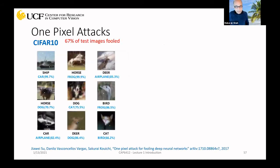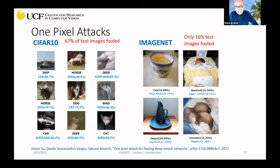Here is an example where you are only attacking one pixel — you just change one pixel. This is a picture of a ship, but when you change one pixel, it recognizes a car with 99.7% confidence. A picture of a horse is recognized as a frog, a deer recognized as an airplane, a horse as a dog, a dog as a kid, a bird as a frog. In total, 67% of these images are fooled on CIFAR-10, and even on ImageNet 16% are wrong.